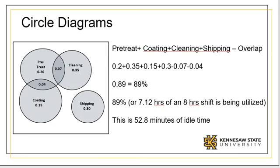This Venn diagram illustrates relationships between events. In this case, there is an overlap between cleaning and pretreat, as well as pretreat and coding. Shipping is mutually exclusive of all activities. Note that each activity has a percent utilization.